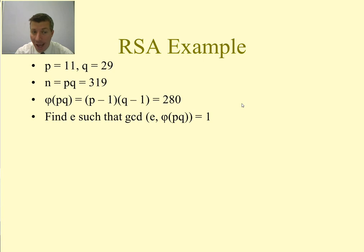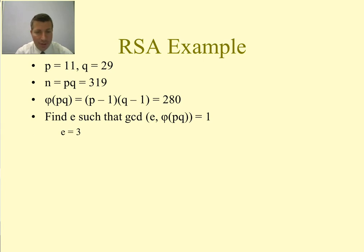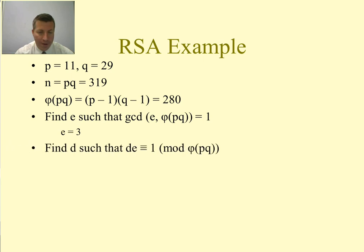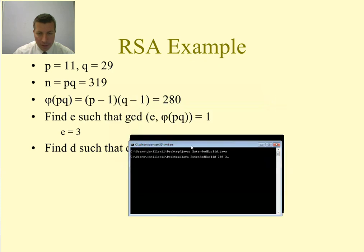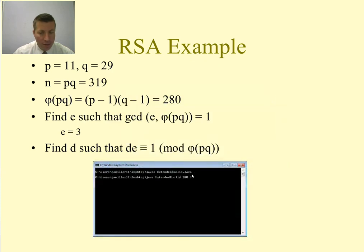A prime number is an easy choice for e. We take e = 3: the number 3 does not divide 280 evenly and has no other divisors, so it is relatively prime to 280. Now for Step 5, we use the extended Euclidean algorithm to find d such that d × e ≡ 1 mod φ(pq), i.e., d × 3 ≡ 1 mod 280. We run the algorithm with inputs 280 and 3.